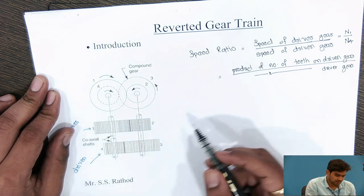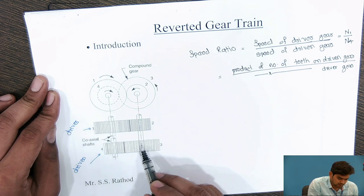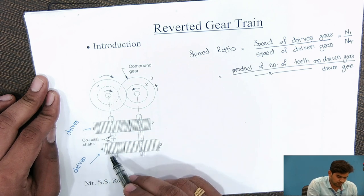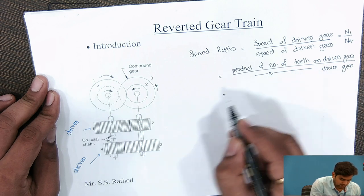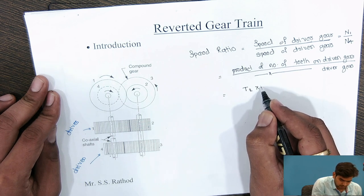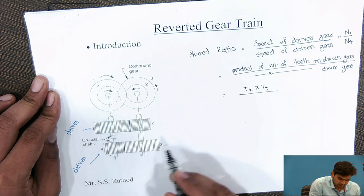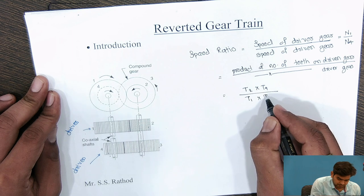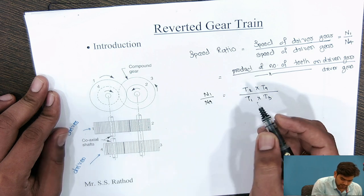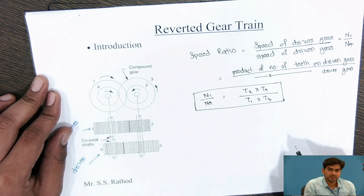Since this is a compound reverted gear train, we can express the speed ratio in terms of number of teeth. Gears 1 and 3 are the driver gears; gears 2 and 4 are the driven gears. So the speed ratio equals the product of teeth on driven gears divided by product of teeth on driver gears: (T2 × T4) / (T1 × T3), which equals N1 / N4.